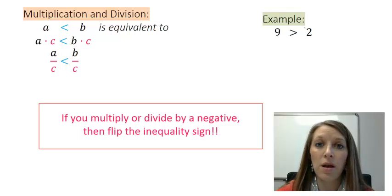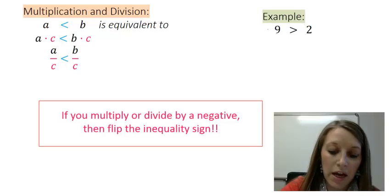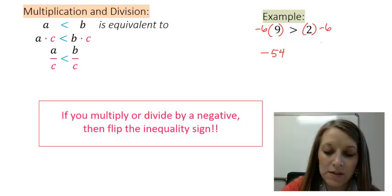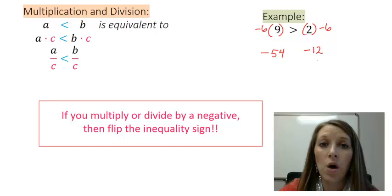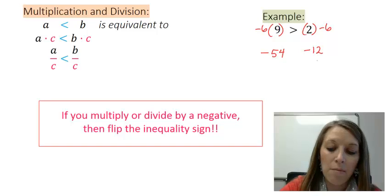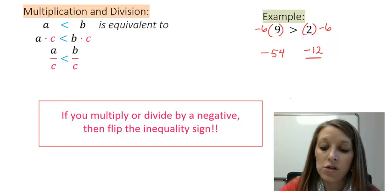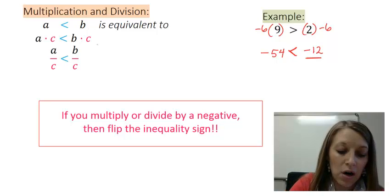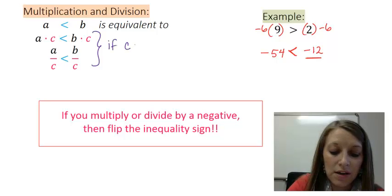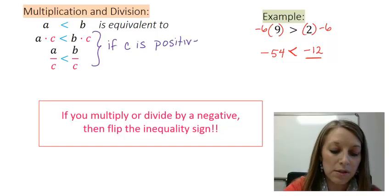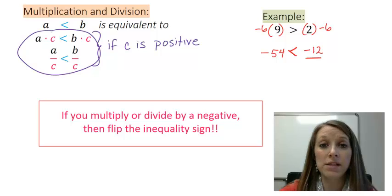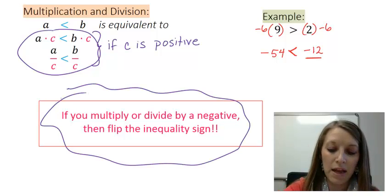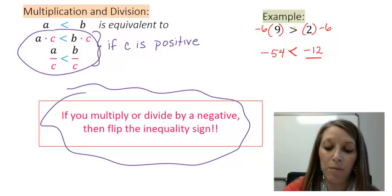Let me prove this by multiplying both sides of 9 > 2 by negative 6. 9 times negative 6 gives me negative 54 on the left, and 2 times negative 6 gives me negative 12 on the right. On a number line, negative 12 is to the right of negative 54, so negative 12 is actually bigger than negative 54. These statements only remain true if your constant C is positive. If you multiply or divide by a negative number, your inequality sign must flip — from something like greater than into less than.